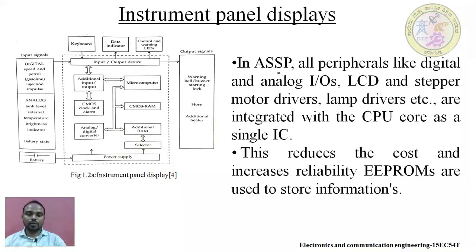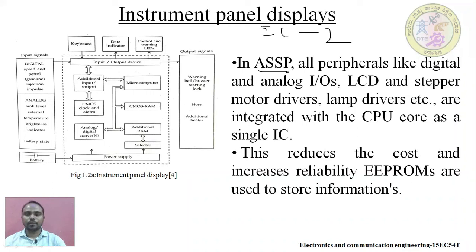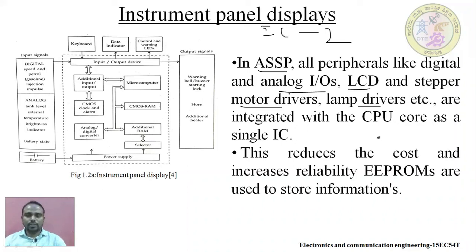When an IC is fabricated, it is classified into two categories: ASIC and FPGA. ASIC means Application Specific Integrated Circuit, also known as ASSP. FPGA means Field Programmable Gate Array. The ASIC or ASSP is a chip manufactured with all required peripherals — analog input/output, LCD, stepper motor drives, lamp drives — together on one chip. FPGA can be programmed, allowing the programmer to customize the programming.